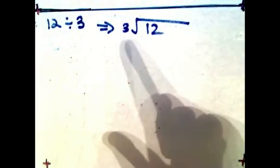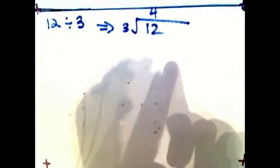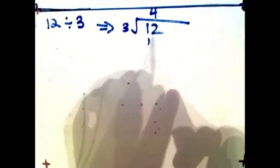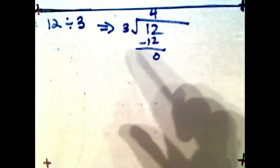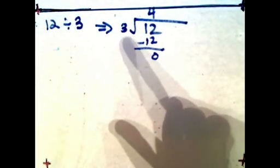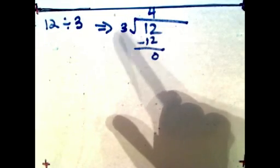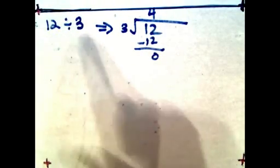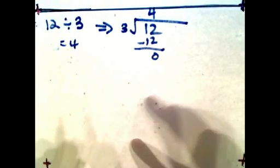So what you do is: 3 divided into 12, how many times? 4 times — because 4 times 3 is 12. Subtract, and the difference is 0. That's normally how we do division using this method. We want to find how many times 3 goes into 12. We know it's 4. 4 times 3 is 12, minus 12, there's no leftover. So the answer: 12 divided by 3 equals 4.